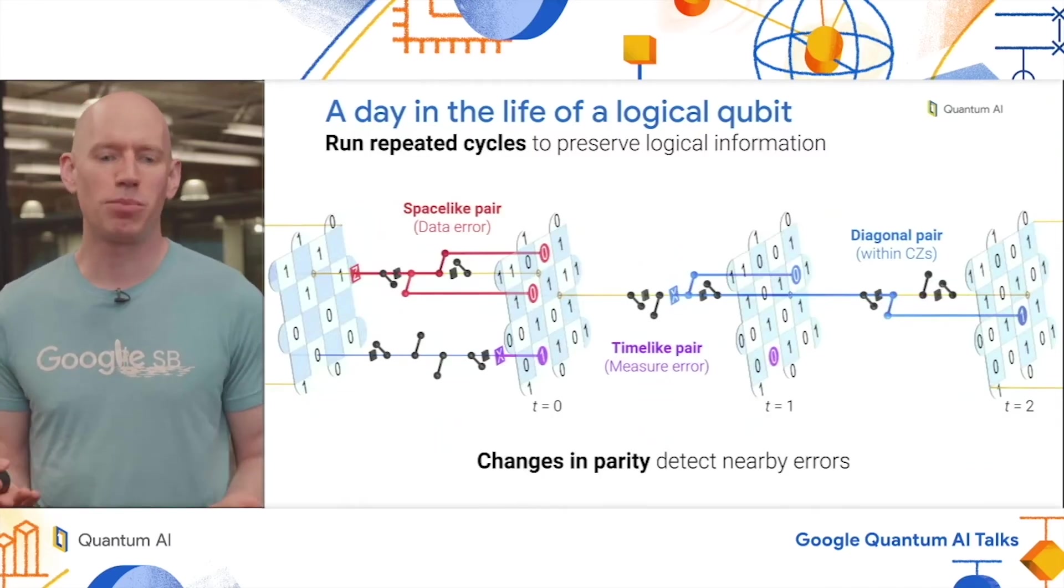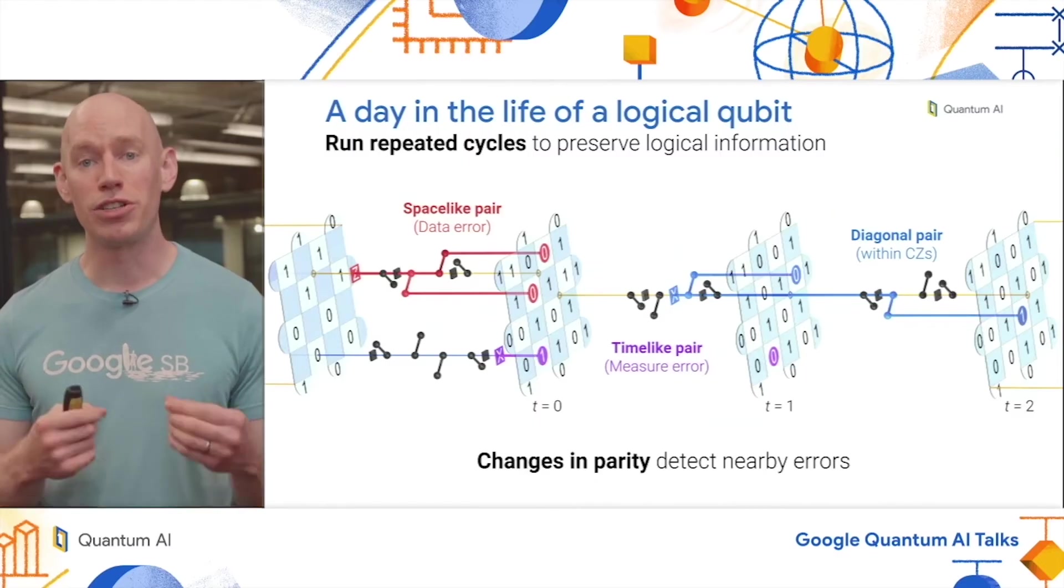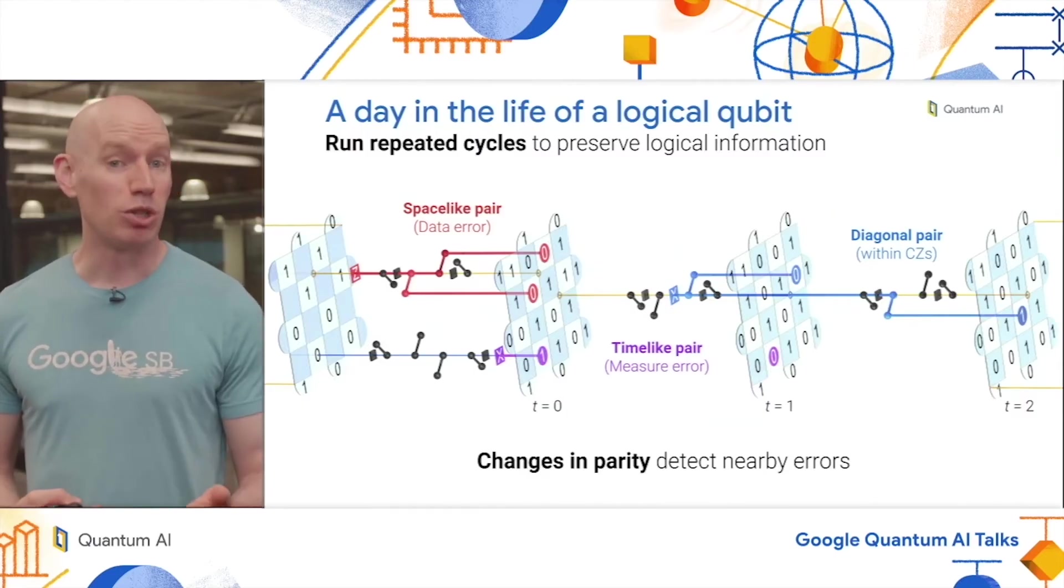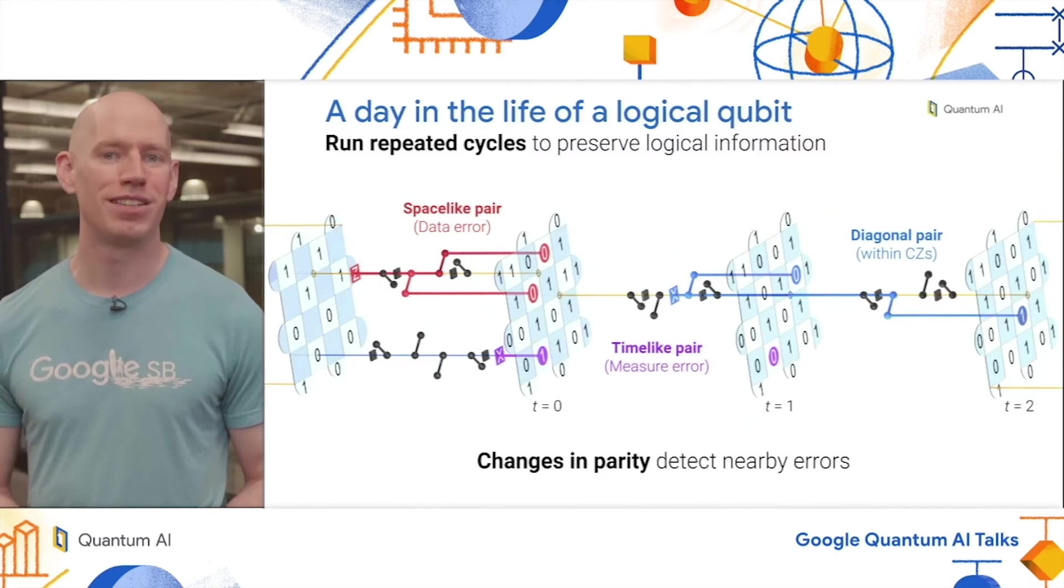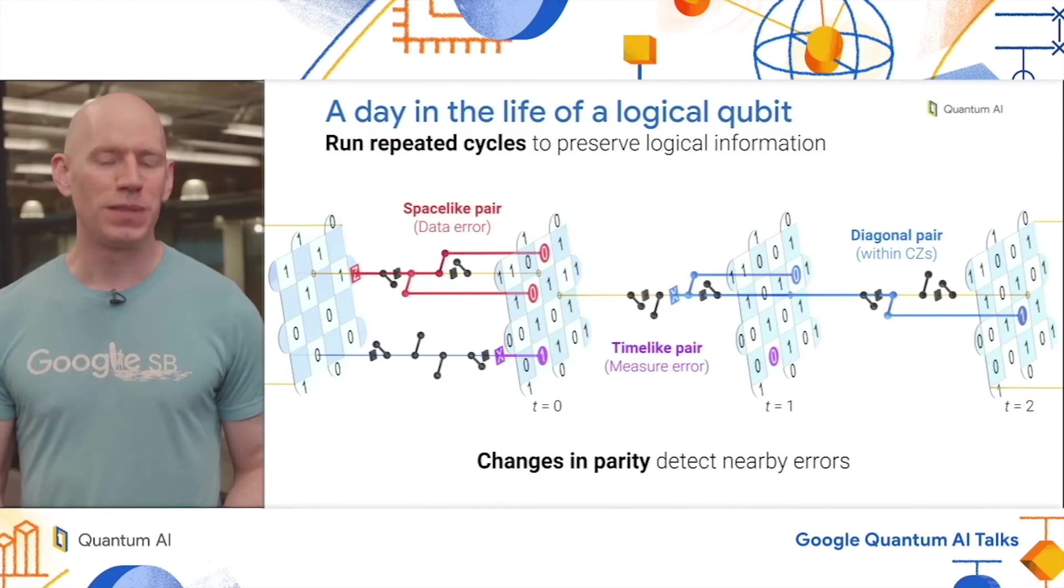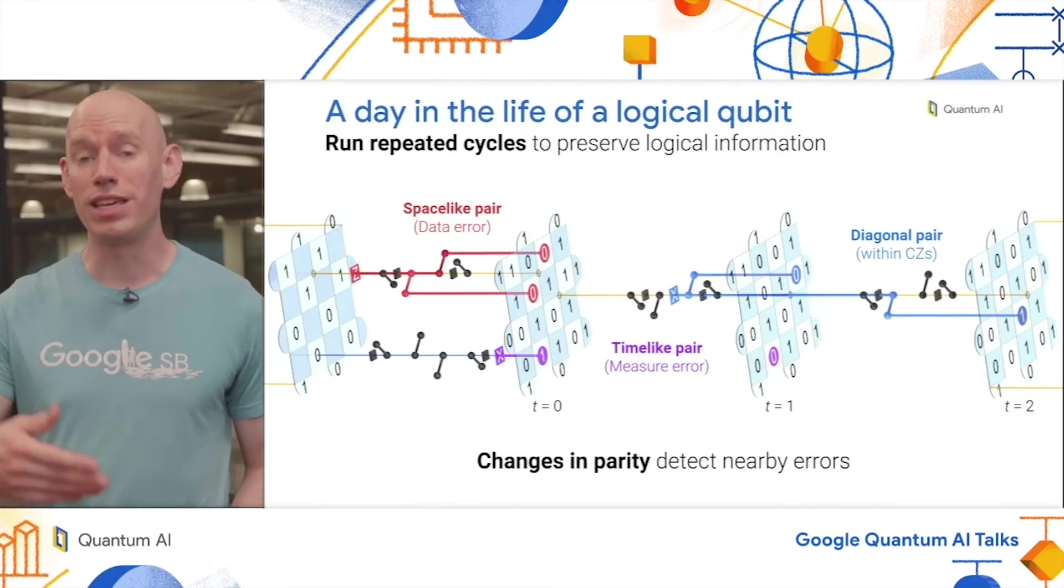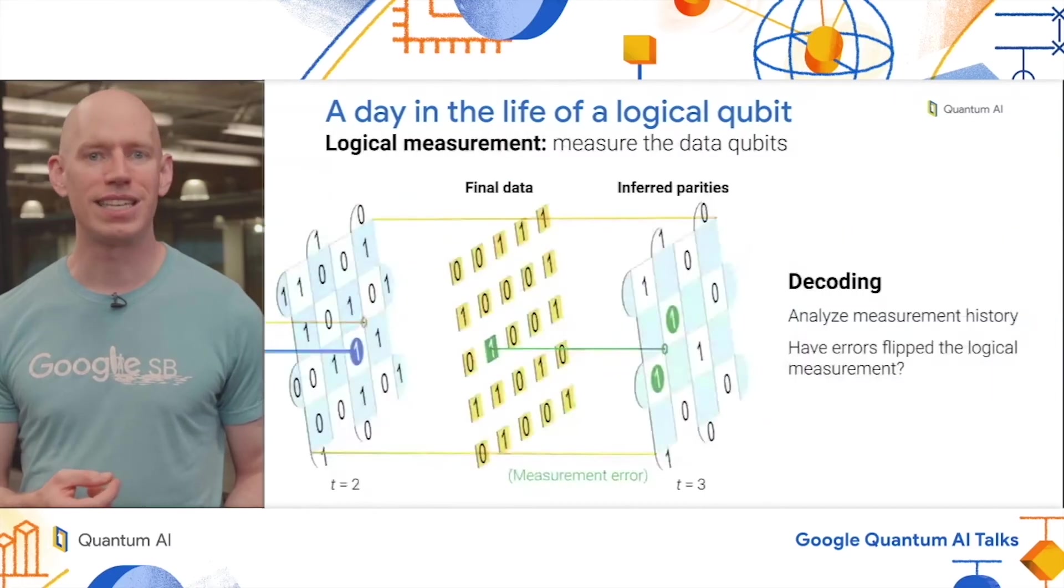Now with the state initialized, the basic process is to run repeated cycles to preserve the logical information and to keep track of what errors might be occurring. Say we have an unwanted Z gate on one of our data qubits at the beginning of a cycle. This propagates to two adjacent measure qubits so that we measure zero indicated in red, while we would have expected to measure one. Having these pairs of detections indicates a nearby error. Similarly, we can look at a measure qubit error. This measure qubit did a great job going through all its control Z gates, but messed up its measurement at the last moment. So it should have seen a zero but saw one instead. In the subsequent cycle, it did everything right and we saw zero. So these two changes in parity indicate a nearby error, in this case a measurement error. There are many more types of pairs of detections we can see. If we have an error occur within the control Z gates, we might see one detection right away, and the other will have to wait until the next cycle. So we can see separations in both space and time.